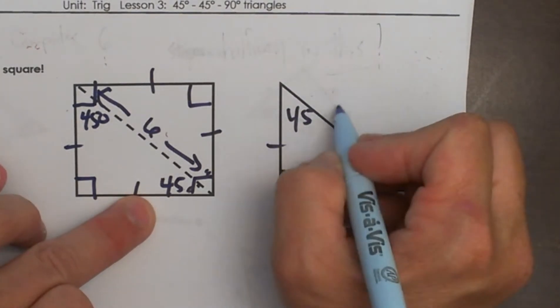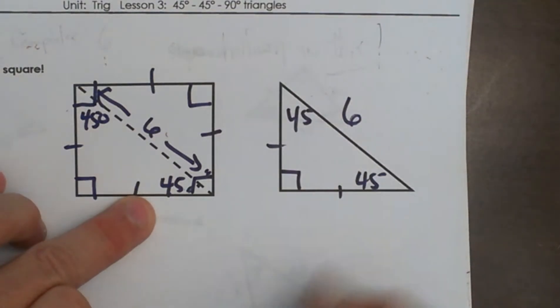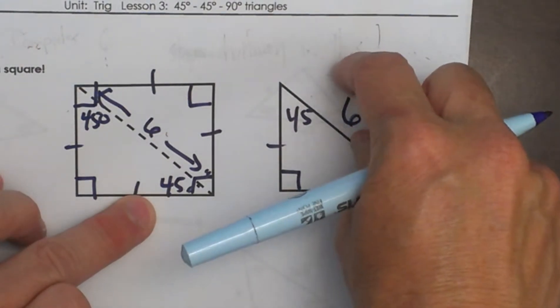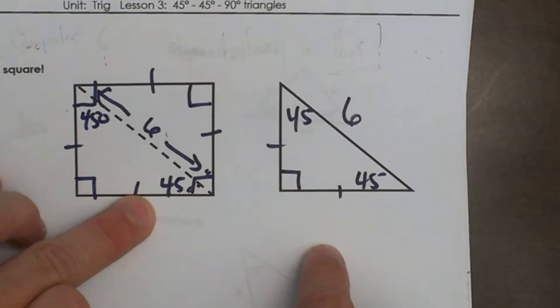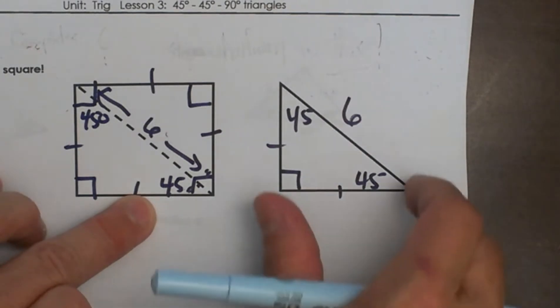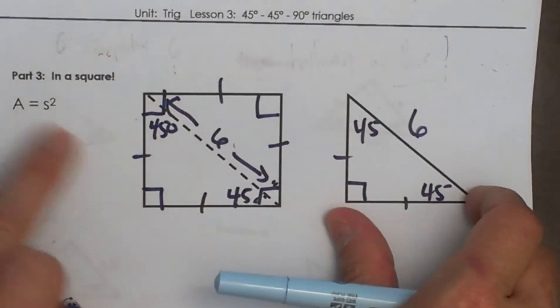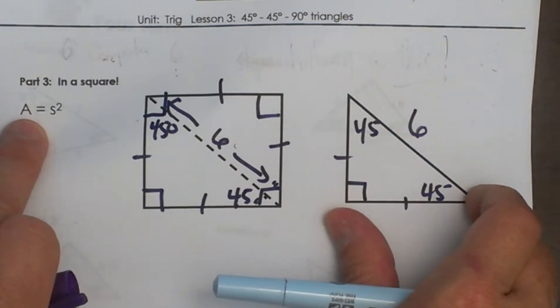With a hypotenuse of 6. How do you work from the hypotenuse backwards to the leg so I can figure out the side? Because in my formula for area I need my side to square it.